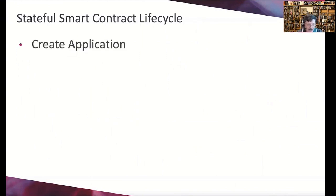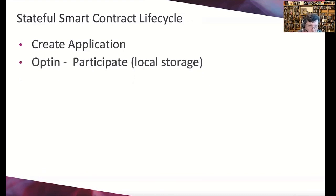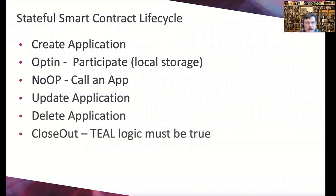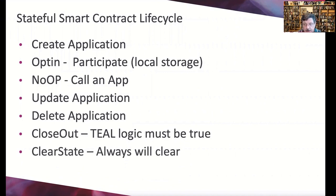For stateful smart contract lifecycle — analogous to asset lifecycle — you create it and get an application ID, not an address. You opt in to participate with local storage. The creator can opt in as well. A no-op call runs the app. You can update or delete the application. Close out requires the logic to be true. Clear state differs from close out in that it will always clear no matter what.